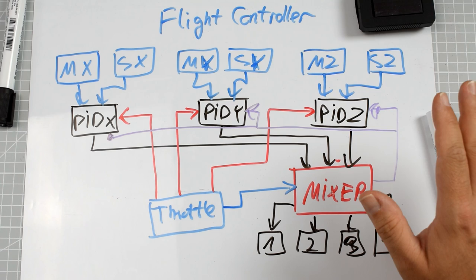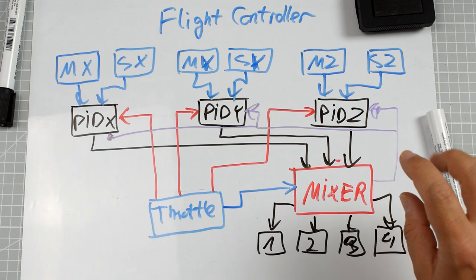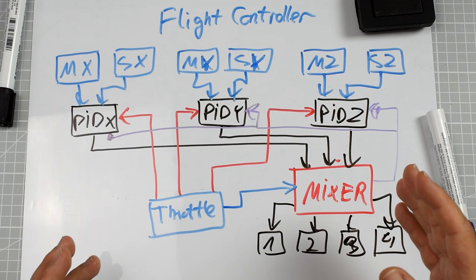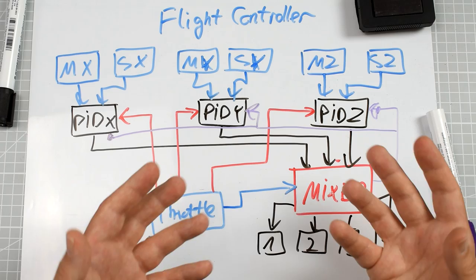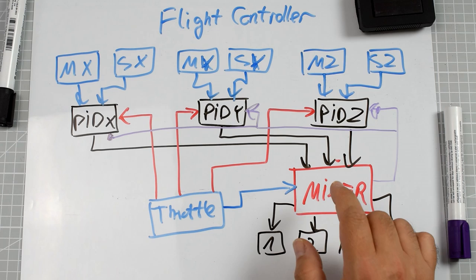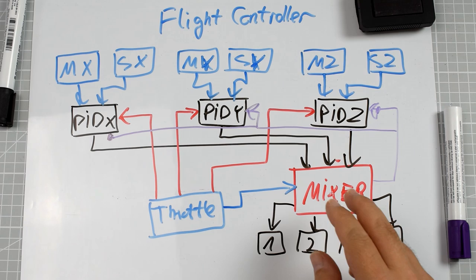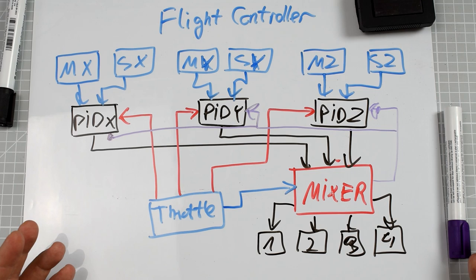Anti-windup handles the situation when one of the motors reaches its peak output, meaning the current rate is not achievable by the system. The I-term on that axis should be limited, because if not, it will wind up to a super high or super low value, and when there is an order to stop the movement it will cause follow-through and unnecessary wobble. So on modern flight controllers, information from the mixer is fed back to the PID controller when a motor is saturated, and throttle information is also fed to the PID controllers.